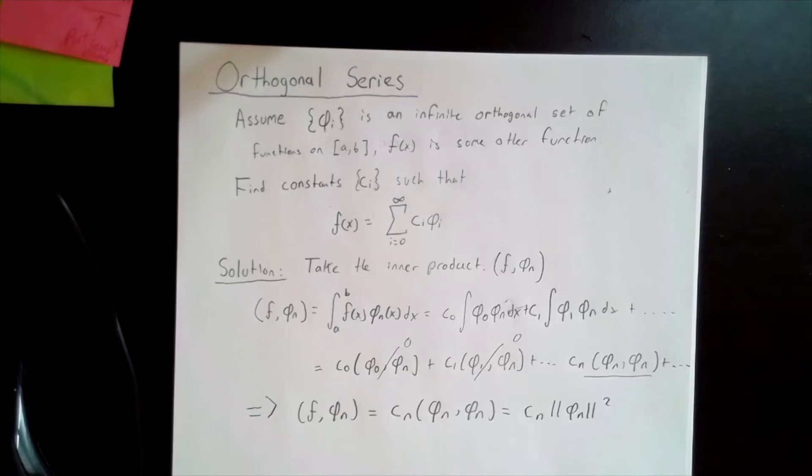Then the inner product of the function f with phi i is equal to the constant ci times the inner product of the function phi i with itself, or as we've already defined, ci times the square of the norm of phi i.